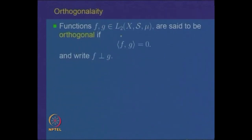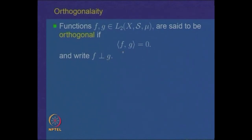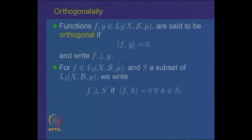Once we have the notion of inner product, we can define when two elements in L2 are orthogonal or perpendicular to each other. We say f and g in L2 are orthogonal if their inner product ⟨f, g⟩ = 0, written f ⊥ g. We can also say f is orthogonal to a subset S if ⟨f, h⟩ = 0 for every element h in S. Similarly, we can define orthogonality of two sets.